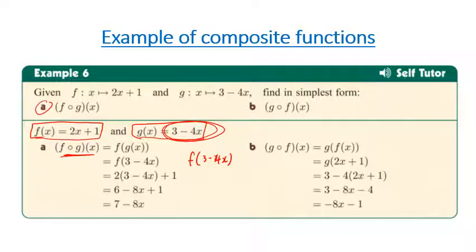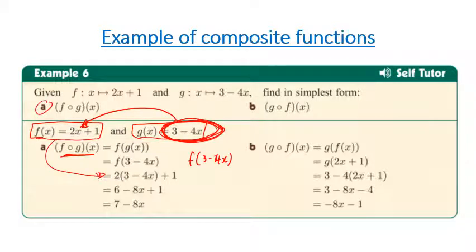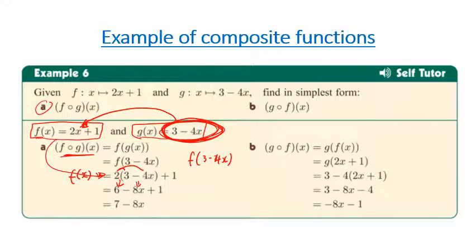We're substituting whatever's been circled into where our x value is in the f of x function. So this is the f of x function, but instead of having x here, we've now replaced it with whatever g was. We then multiply out — that gives us 6 and negative 8x. We collect like terms: 1 and 6 make 7, and we've worked it out from there.